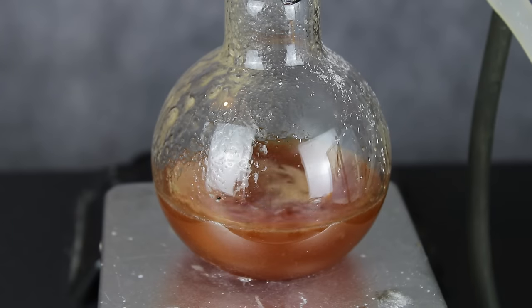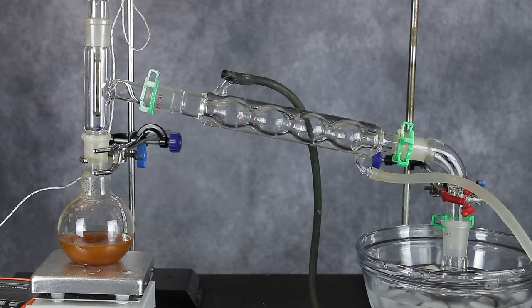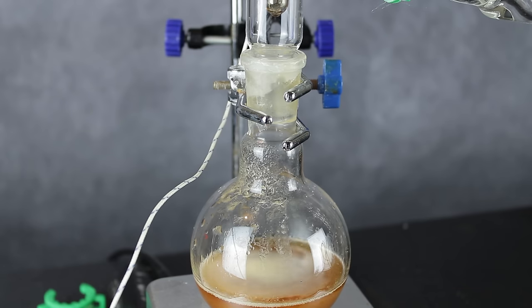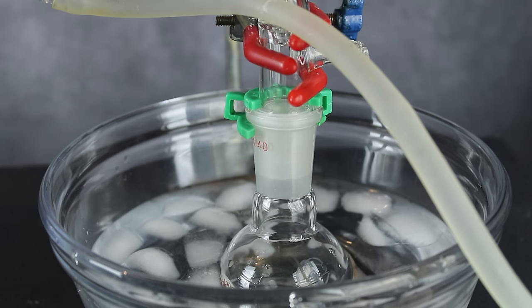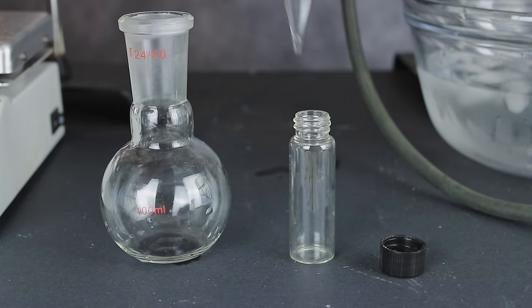Anyways, after about two hours, the reaction seemed mostly complete, so I reconfigured the setup for a distillation. Tert-butylamine boils at roughly 45 degrees celsius, so most of it came over in the initial fraction. I kept collecting the distillate until the temperature reached about 70 degrees, at which point the heat was turned off and the product was isolated.